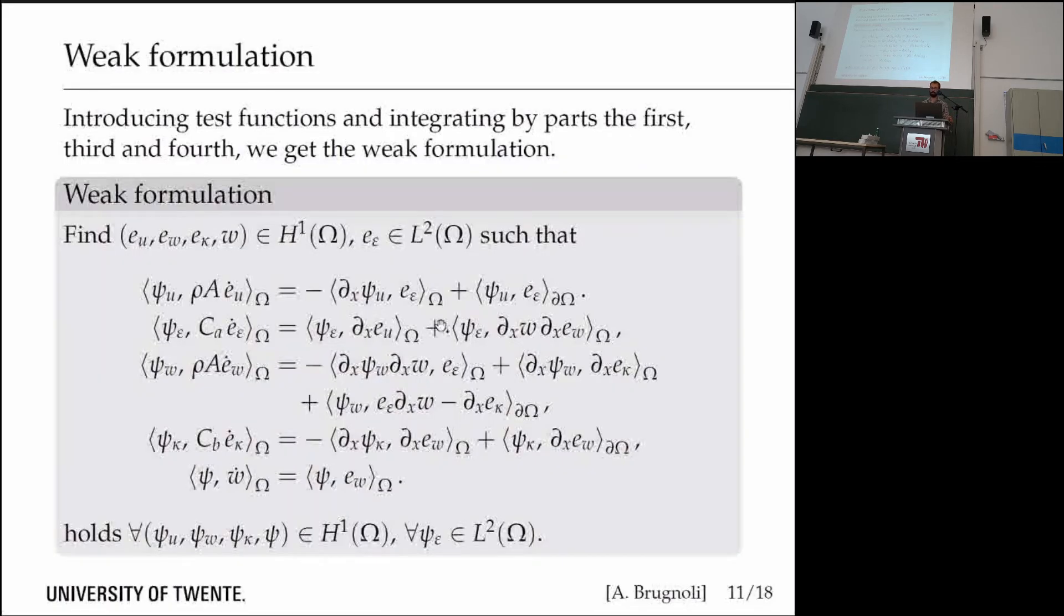In this specific case, I integrate by parts the first, third, and fourth lines. The reason is that I do not want to use H2-conforming finite elements for the bending part. It's very common in conforming finite elements for thin beams and plates to use complicated elements, but I don't want to do that. That's why I integrate by parts these lines.